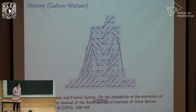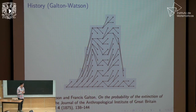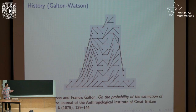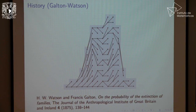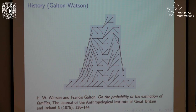Let's start with some history, going back to the year 1875 — still the Victorian era in England. They were very worried about the propensity to disappear of aristocratic family names. Galton, a polymath, proposed the problem of mathematically studying the probability of extinction of families. Then Reverend Watson, together with Galton, made this analysis that we still teach to undergrads these days.